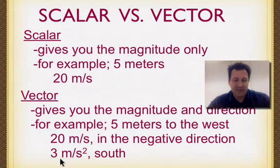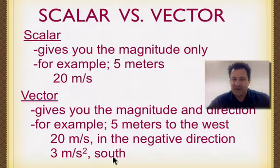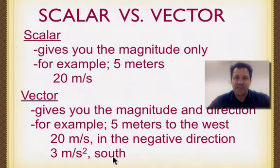The last example here is 3 meters per second squared. That's an acceleration, and acceleration is also a vector. You have to include a direction if you want to describe acceleration, as it tells us whether we're slowing down or speeding up.